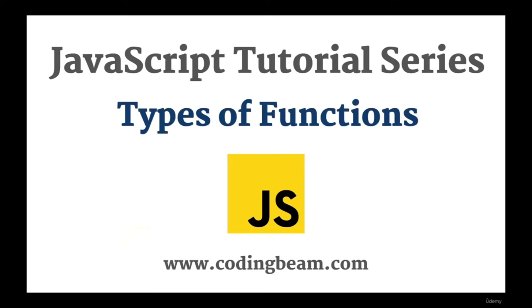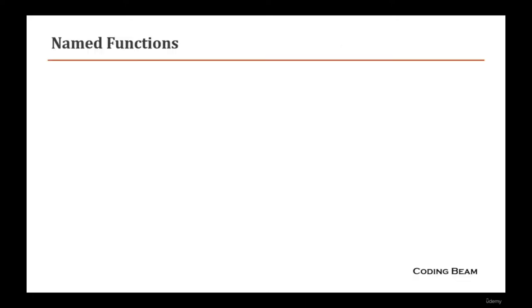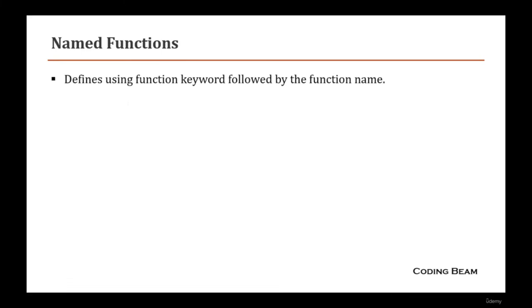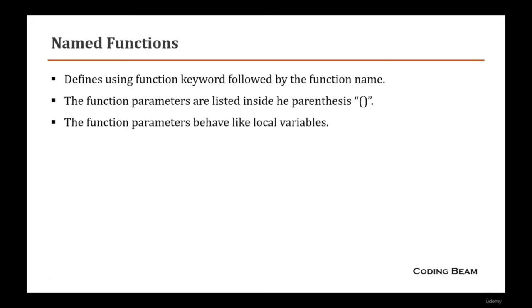There are three types of functions: named functions, anonymous functions, and arrow functions. Named functions are defined using the function keyword followed by the function name. Parameters are listed inside the parentheses and behave like local variables with local scope.